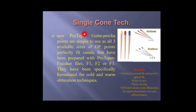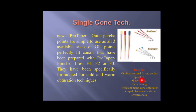The single cone or monocone technique is used with the ProTaper instrumentation system. The ProTaper system has finisher files and gutta-percha is designed according to the shape of the file, so it adapts to the apical and lateral walls of the canal and does not require accessory cones. It is a beneficial method because it is fast, simple, time-saving, and has good adaptation to canal walls. This is called the single cone obturation technique.